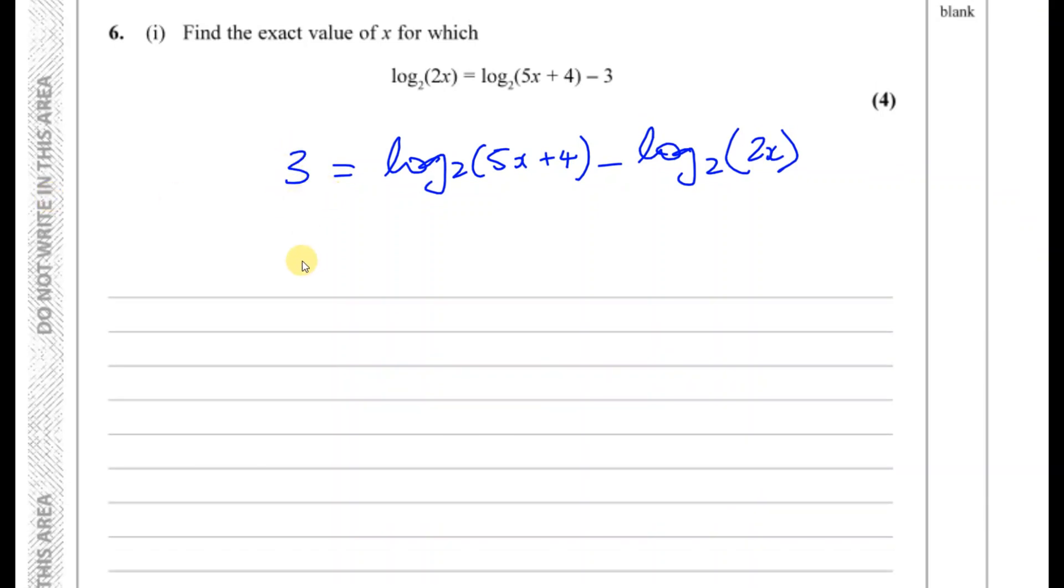We'll have a positive number here rather than a negative number. So we can say 3 is equal to, now we're going to use the law of logarithms which is such that the log of a minus the log of b if there is the same base, for example let's call it the base y, is equal to the log to that same base of a over b. So the subtraction law gives you a division. So here you're going to have log to the base 2 of the quotient of these two, so it's 5x plus 4 divided by 2x.